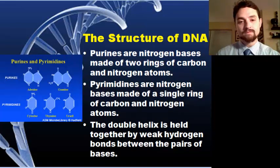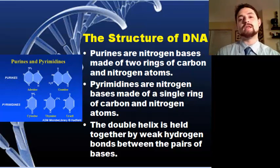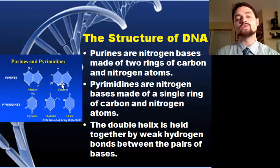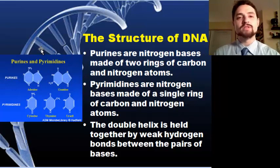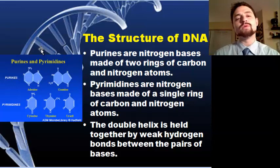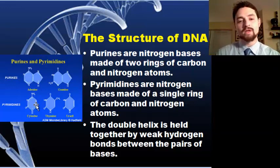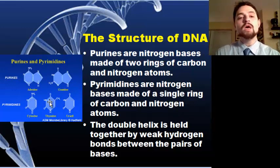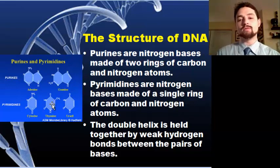The purines are nitrogen bases made of two rings of carbon and nitrogen atoms — you can see adenine and guanine here. You don't need to remember all the components in this course, but you do need to know that purines are two rings. The pyrimidines are one ring — you can see cytosine and thymine, and uracil, which we'll discuss when we look at RNA.